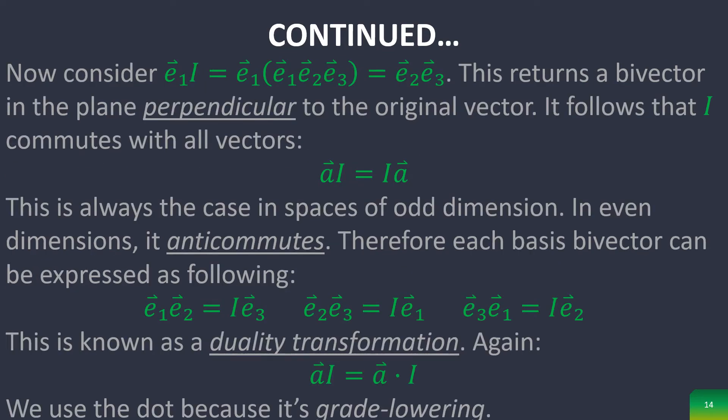If you consider a vector times the trivector, it returns a bivector in the plane perpendicular to the original vector. And then you can easily prove that i commutes with all vectors. But this is only the case in odd dimensions. In even dimensions, which we saw in planar geometric algebra, it anti-commutes.